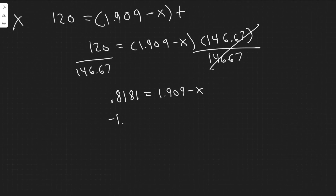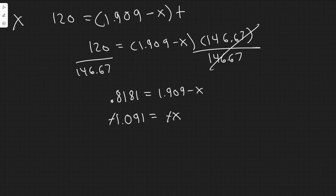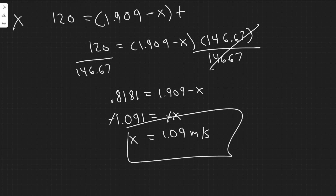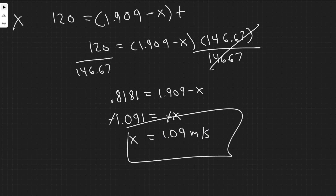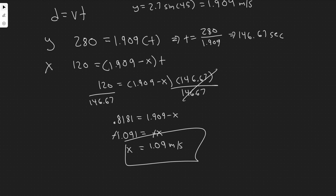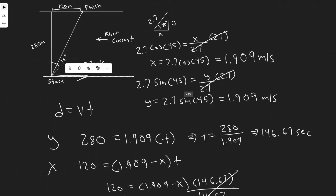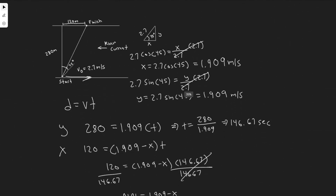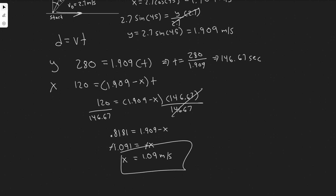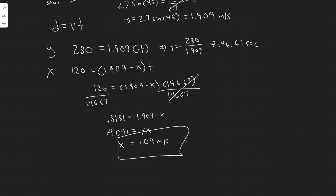Solving: 1.909 − 0.818 = 1.091, so −x = −1.091, meaning x = 1.09 meters per second. The river current's speed is approximately 1.09 m/s. You can round to 1.1 if you'd like, but the velocity of the river current is 1.09 meters per second.